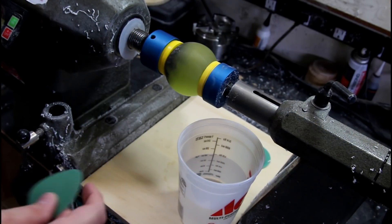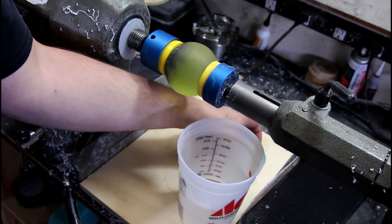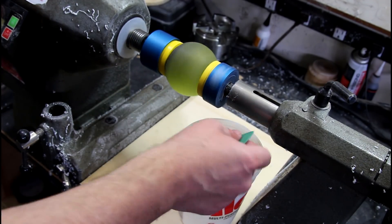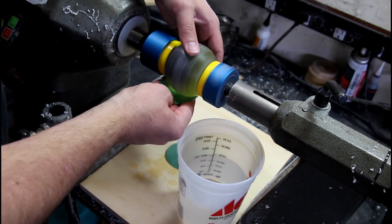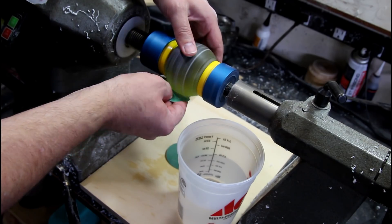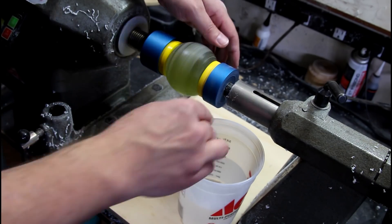And now the last three grits will do wet, which is 400, 600, 800. That's all you're doing when you're sanding, is you're just trying to remove the scratches from the last grit until you get to a point where those scratches are so small you can't actually see them.